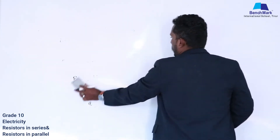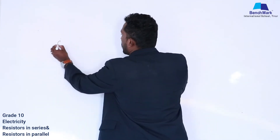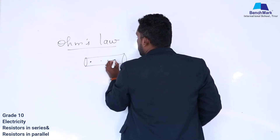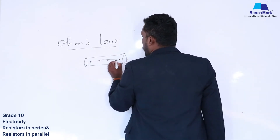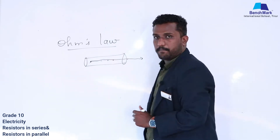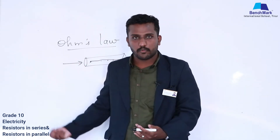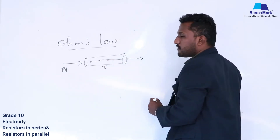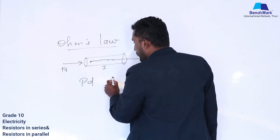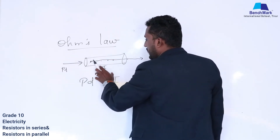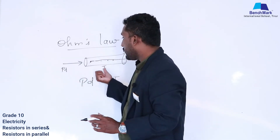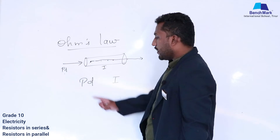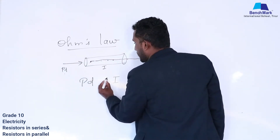Now we are going to discuss Ohm's law. In a conductor consisting of free electrons, if the electron flows that is current. But it will not flow simply — we have to give some work done, which is potential difference. Ohm's law states that if potential difference is more, current will be more; if potential difference is less, current will be less. So potential difference and current are directly proportional.